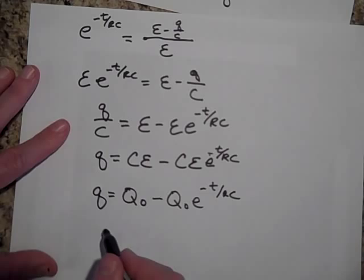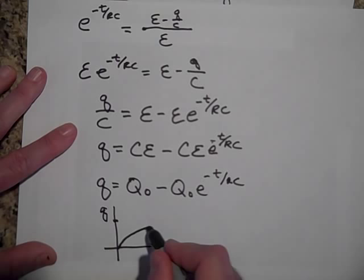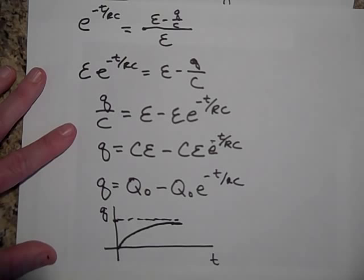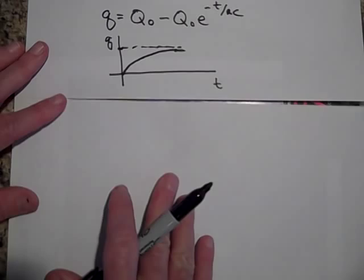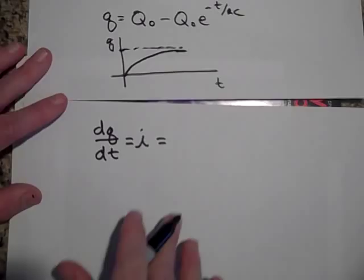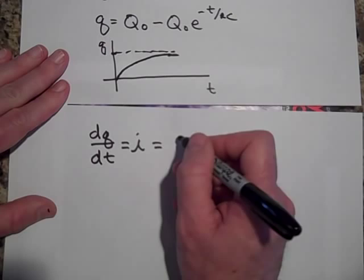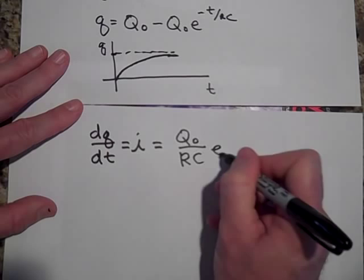If I were to graph q versus t, that gives me a growth graph. One other thought: if that's q, then the rate at which it changes with time is the current. So for a charging capacitor, the current i equals dq/dt. Taking the derivative of q: the derivative of the constant q-naught is zero, and the derivative of the second term gives i equals (q-naught over RC) times e to the negative t over RC. This makes sense because q-naught divided by R is a voltage over R, which is a current.